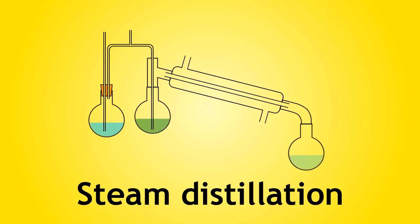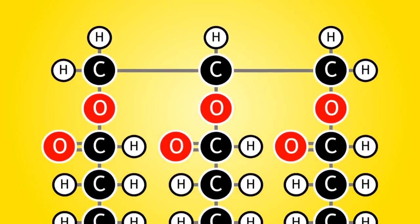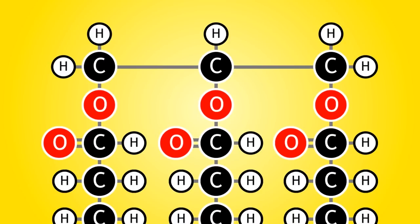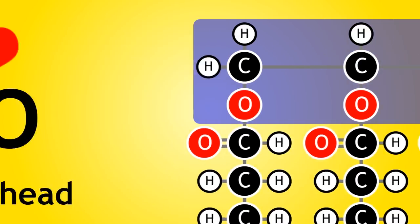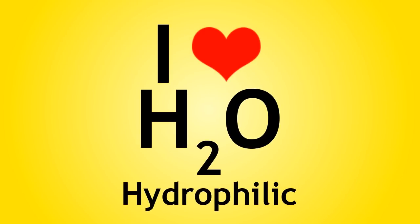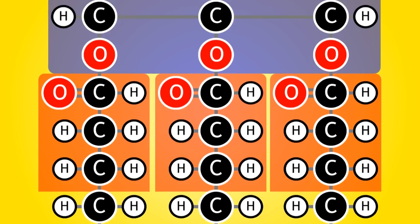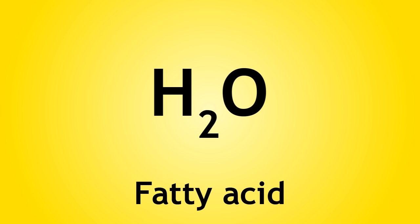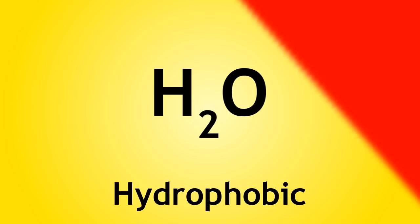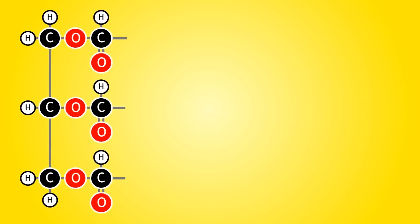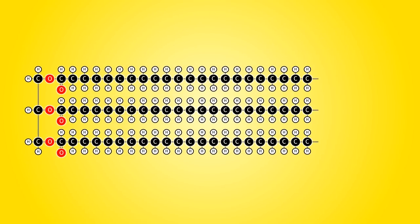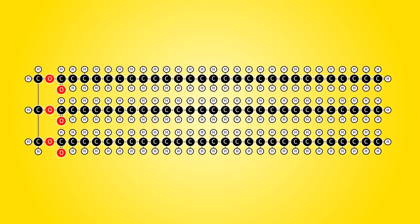We will now look at the general structure of plant oils. The structure can be broken down into two parts. First, we have the glycerol head, which is hydrophilic or water-loving. This head is made of three carbons, each attached to three fatty acid tails, which are hydrophobic or water-fearing. The length of the tail can vary from oil to oil — anywhere from four carbons long to 28 carbons long.